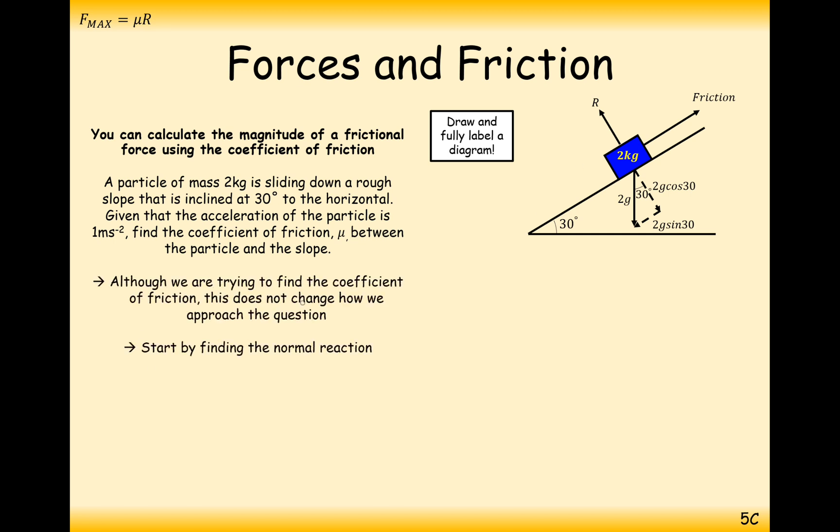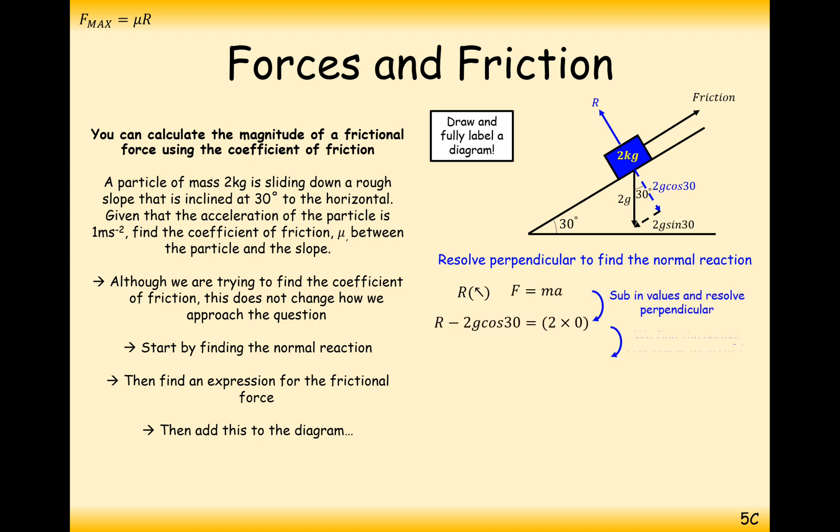Although we are trying to find the coefficient of friction, this does not change how we approach the question. We start first by finding the normal reaction. Resolving perpendicular to the plane, we're going to see that R will balance out exactly with 2g cos 30, because we don't want any acceleration in this blue direction.